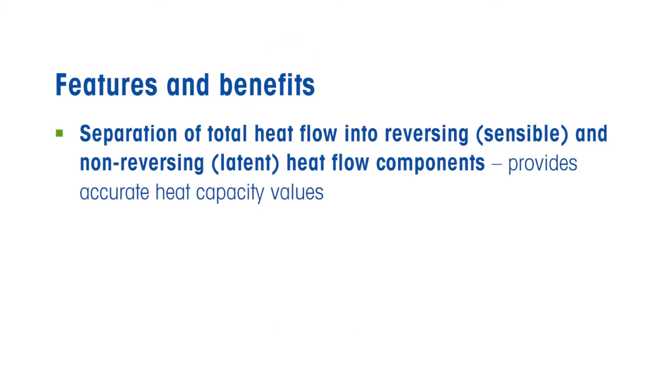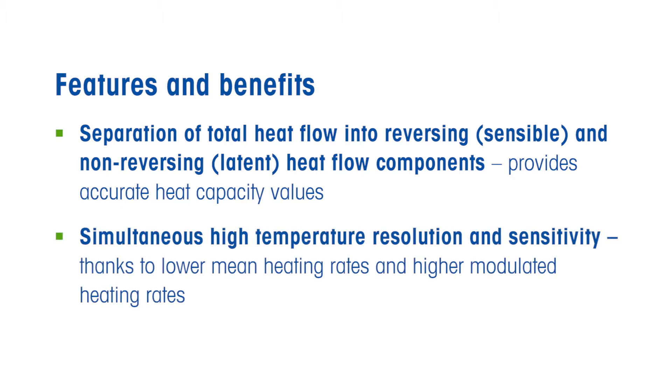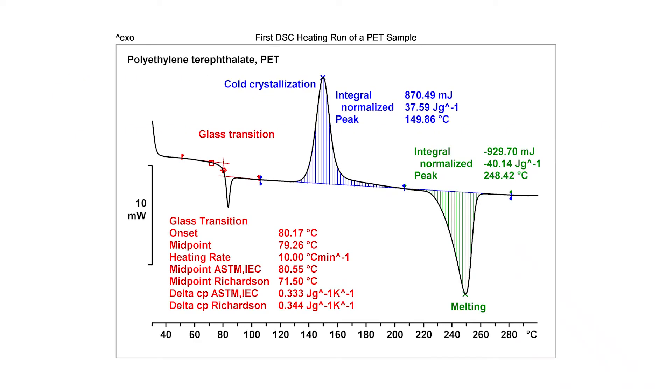ADSC is particularly useful for the separation of superimposed effects. In addition, ADSC measurements permit low underlying heating rates for higher resolution and high modulated heating rates for enhanced sensitivity. For example, the step in the curve at the glass transition is caused by the change in heat capacity of the sample and corresponds to reversing heat flow, while the peak superimposed on the step is due to enthalpy relaxation and corresponds to the non-reversing heat flow.